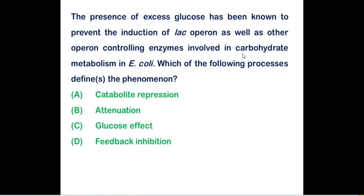Presence of excess glucose has been known to prevent the induction of lac operon as well as other operons controlling enzymes involved in carbohydrate metabolism in E. coli. Which of the following process defines the phenomenon? Option A catabolite repression is correct and option C glucose effect is also correct. Because in that case glucose will be repressing the synthesis of enzymes that are required for the utilization of secondary sugar like lactose. Both option A and option C are correct. Whereas option B attenuation and option D feedback inhibition, they will be controlling the amino acid metabolism.